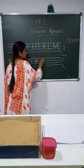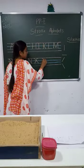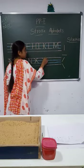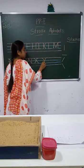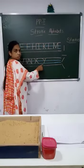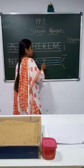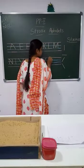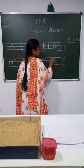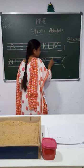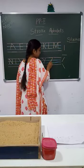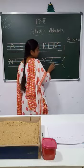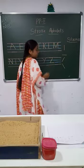Letter Y: right slanting line, left slanting line — letter Y. Letter Z: sleeping line at top, left slanting line, sleeping line at bottom — letter Z.